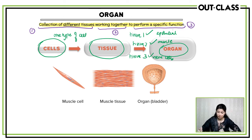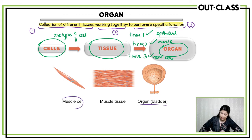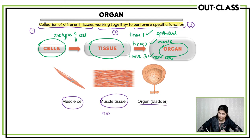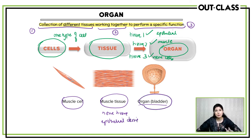For example, take the organ which is the bladder. Your muscle cells form muscle tissue. When this muscle tissue combines with other tissues like nerve tissue and epithelial tissue, it forms an organ known as the bladder. So one organ contains many different types of tissues working together.